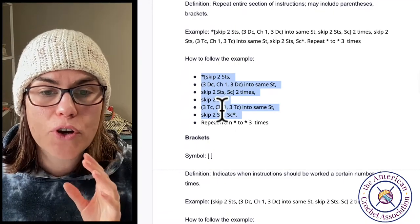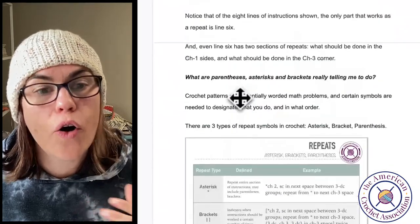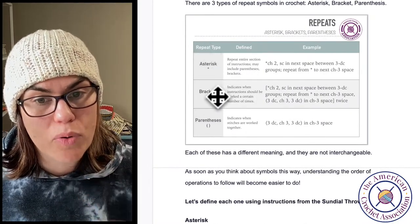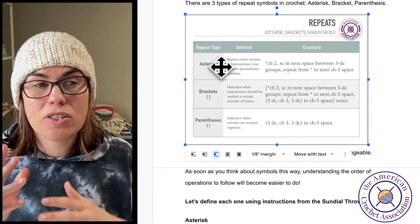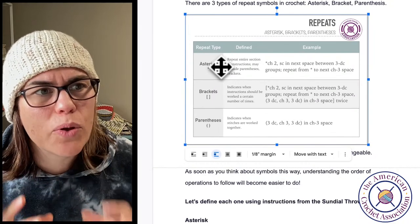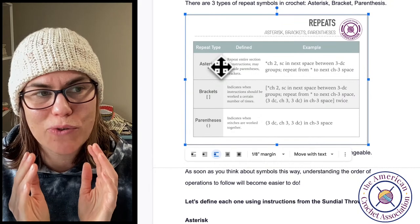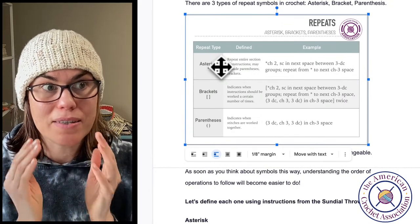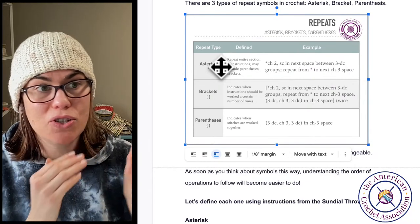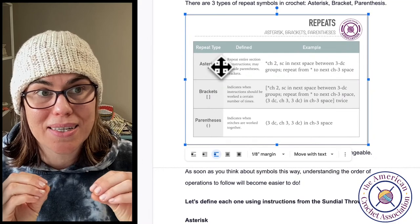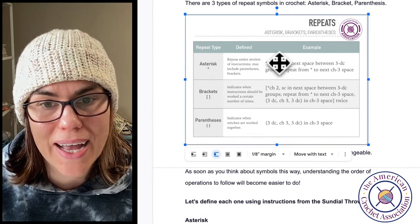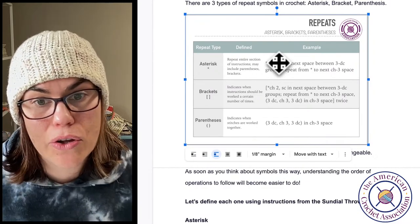So in alphabetical order, we've got asterisk bracket parentheses. Asterisk is typically going to be shown over a broader piece of instruction. Maybe that's not an exact replica, it's not really an easy, simple repeat. It's something that's kind of skewed. And what I mean by that is usually we want repeats to be something that just makes sense. Three double crochet, chain one, three double crochet into one stitch, skip two stitches, single crochet. That makes sense. Asterisk means you're taking all these different pieces into one piece of instruction and that's what you're going to repeat over and over again.